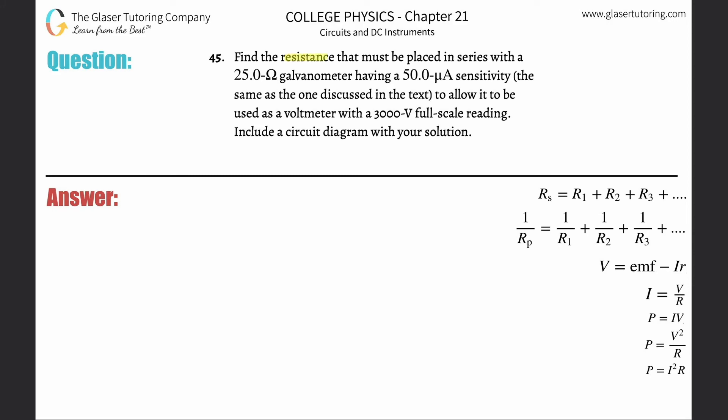Number 45: Find the resistance that must be placed in series with a 25-ohm galvanometer having a 50 micro-amp sensitivity to allow it to be used as a voltmeter with a 3000-volt full scale reading.